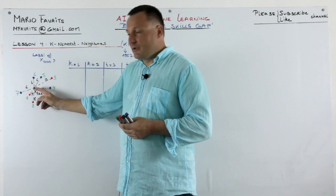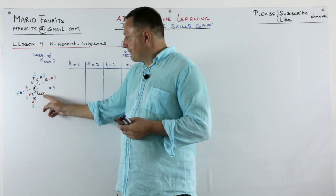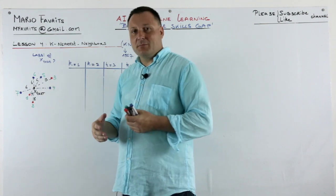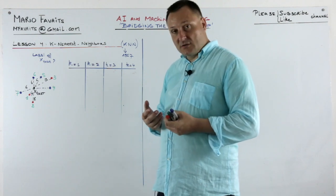We have in the middle a black point here which we call x-test and that point is surrounded by some blue and red dots.